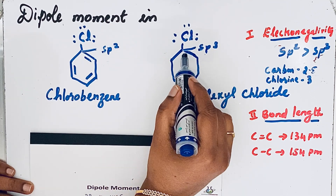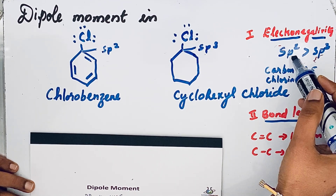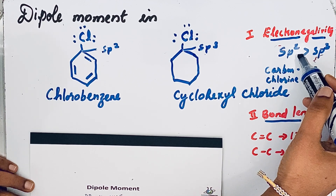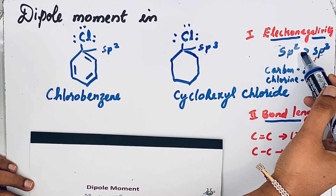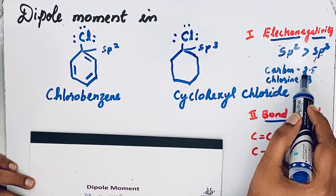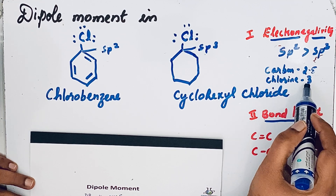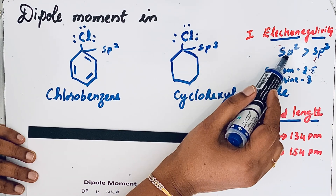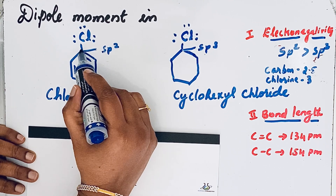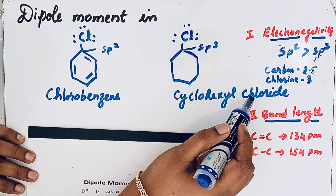For sp2 carbon, the s-character is greater than in sp3 carbon. The greater the percentage of s-character, the greater the electronegativity. That is why carbon's electronegativity is 2.5, while chlorine — a highly electronegative element — has an electronegativity of 3. Therefore, sp2 carbon has more electronegativity than sp3 carbon.